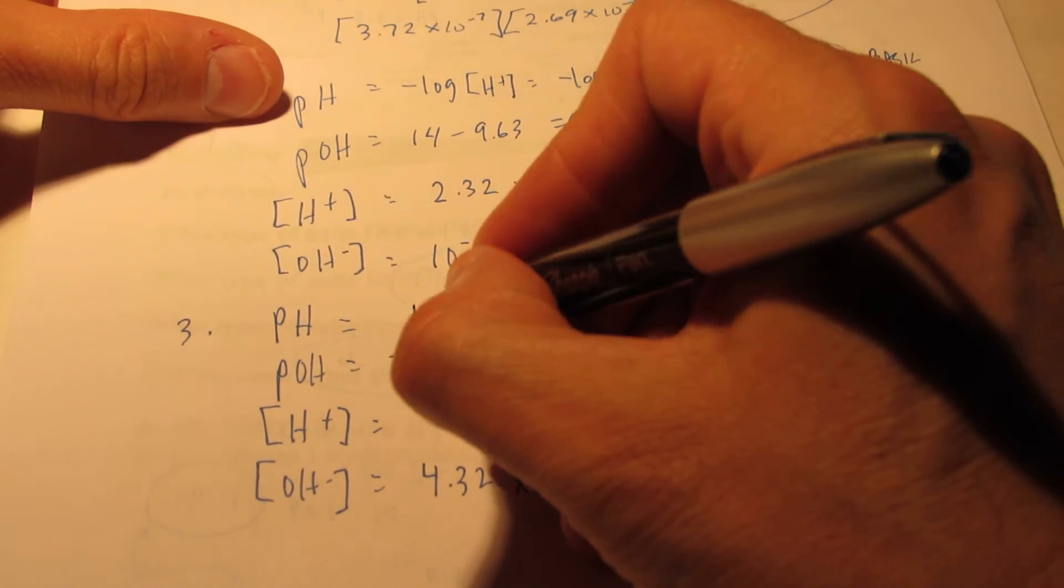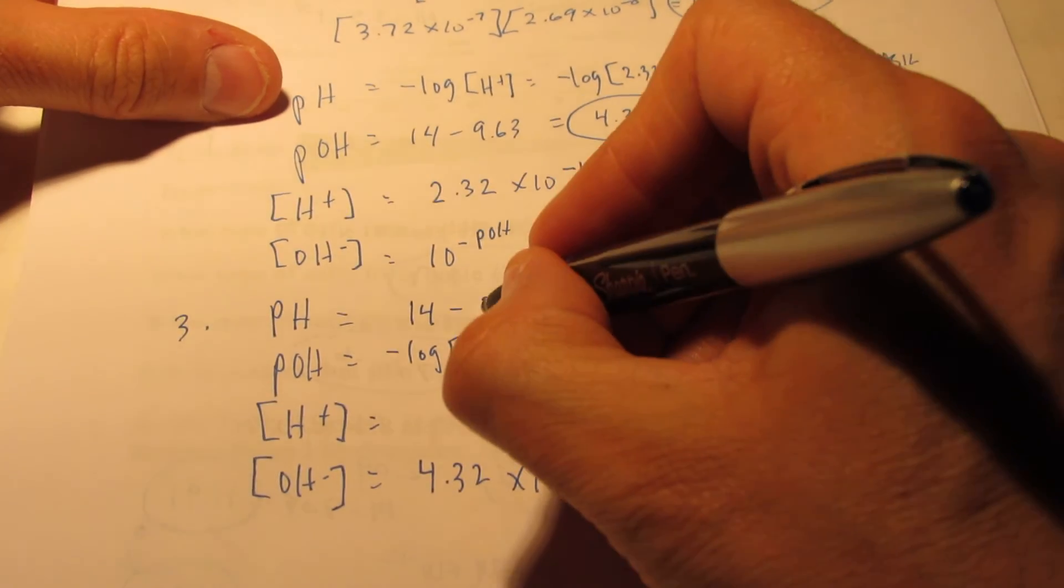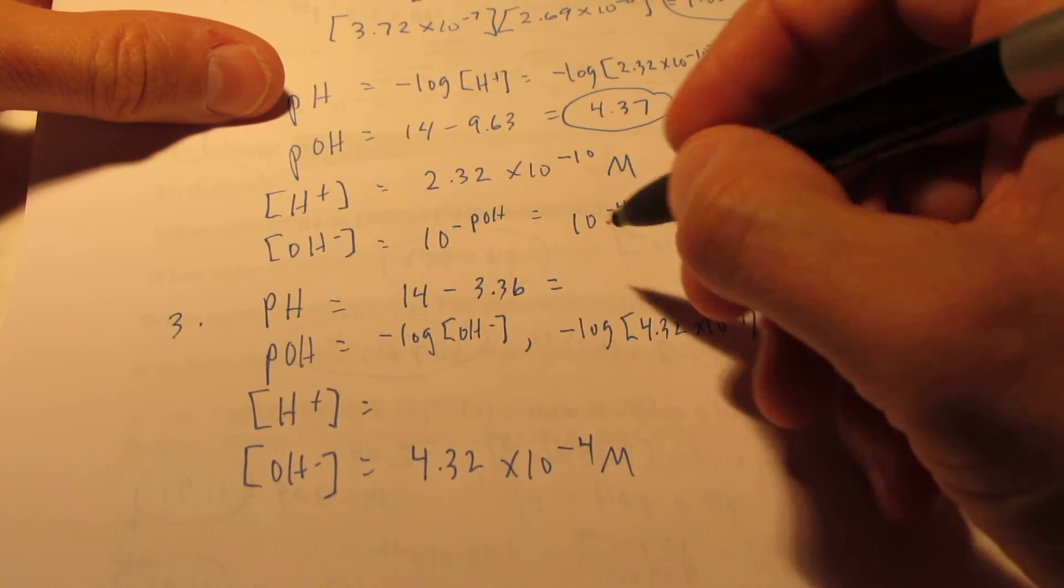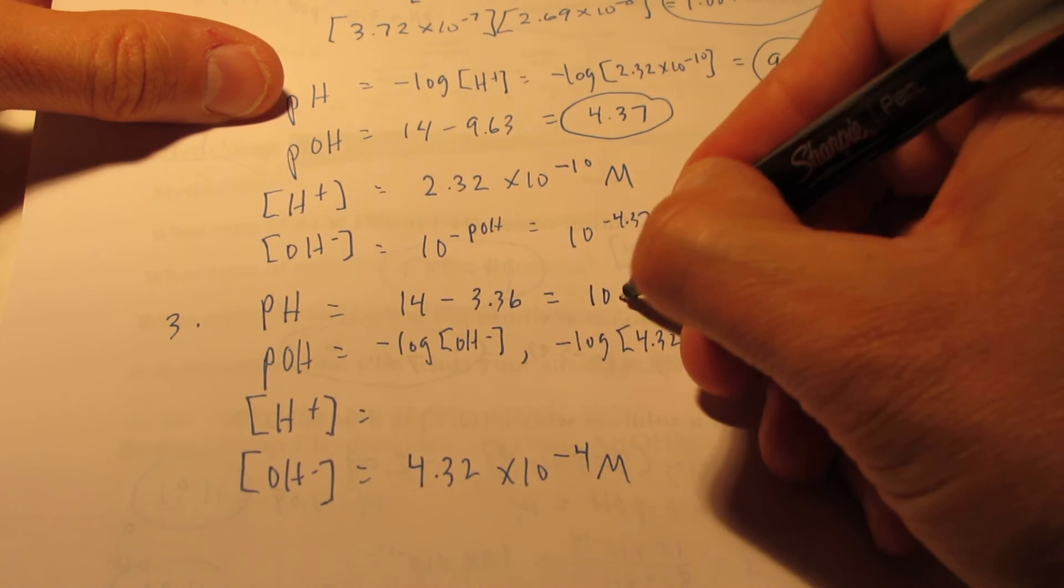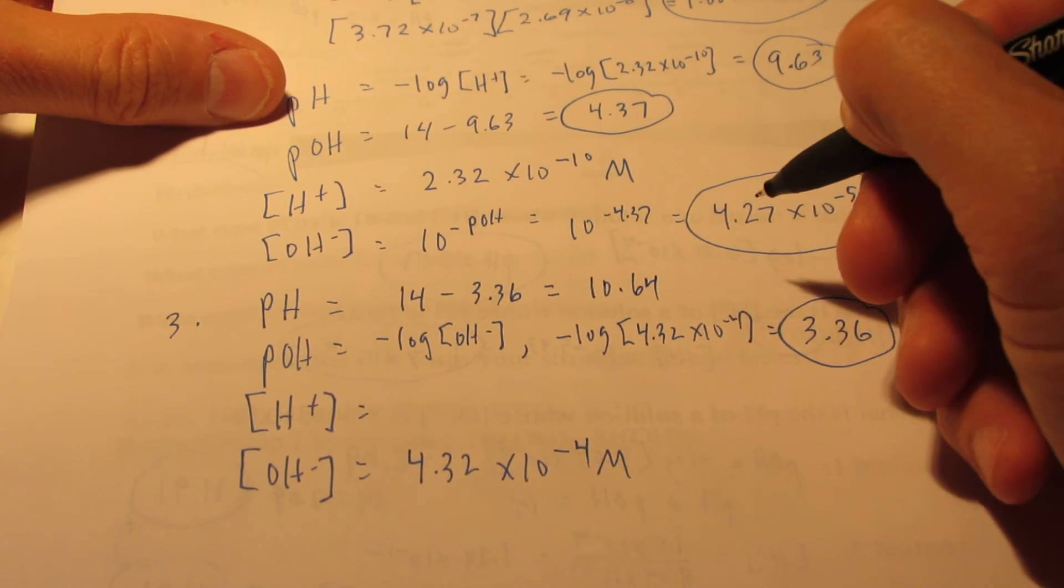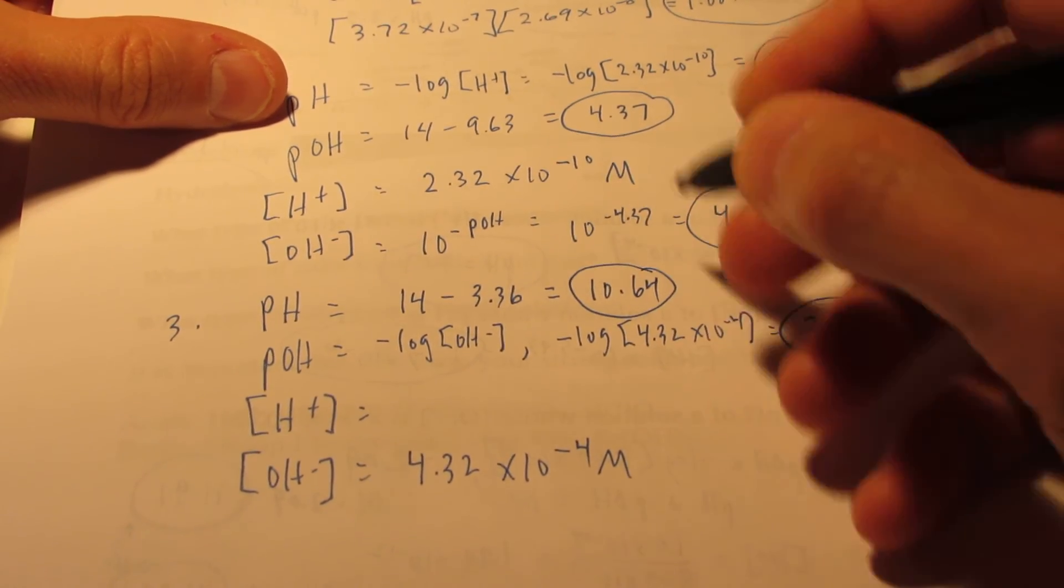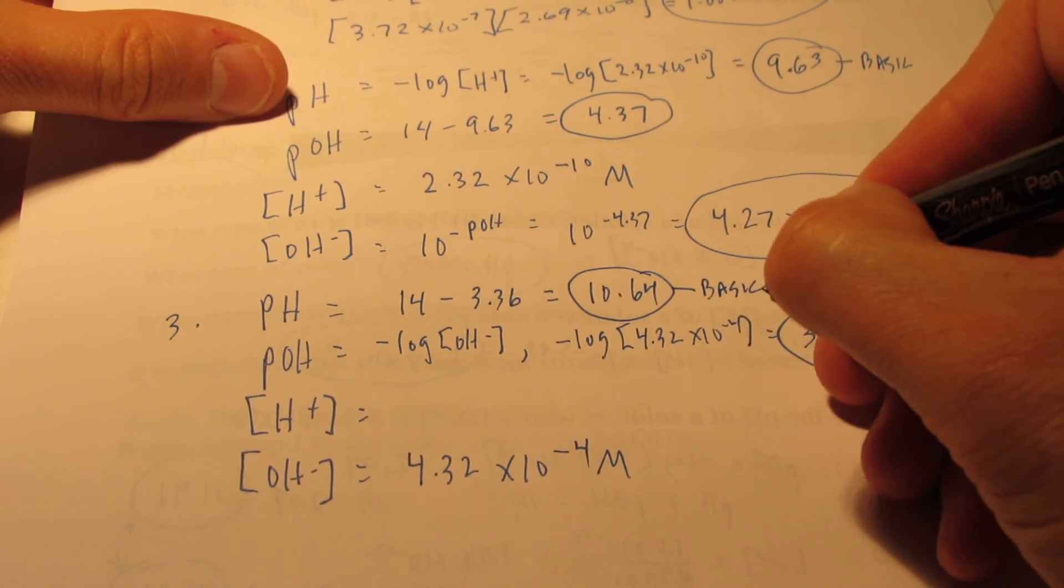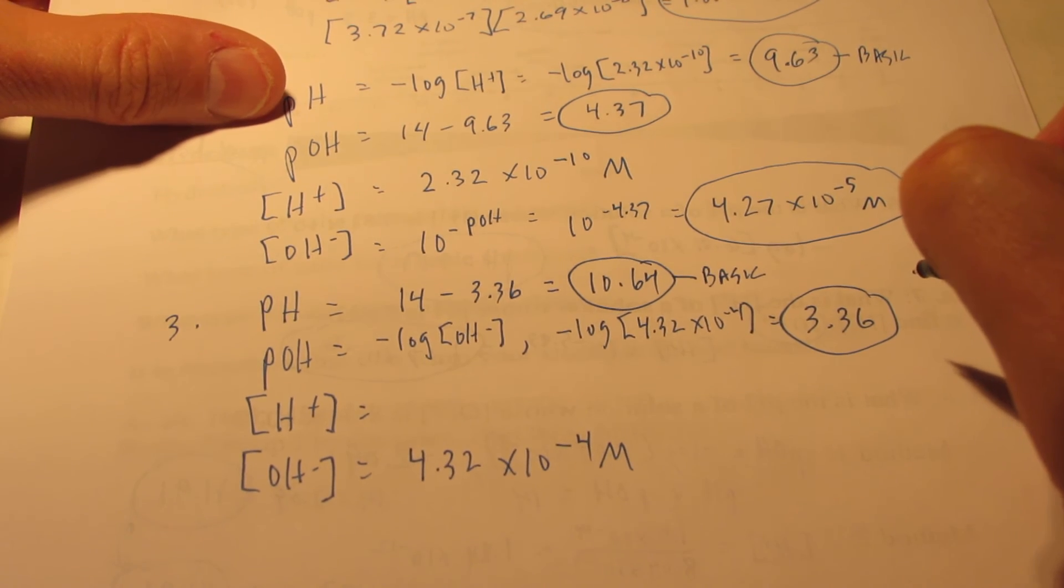My pH? Well, that's going to be 14 minus 3.36, isn't it? And so, let's see, that would be 10.64 if I did my math right. Notice that's higher than 7. So, the pH is higher than 7. That's a basic solution.